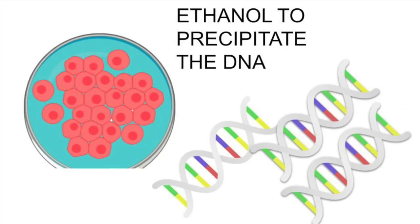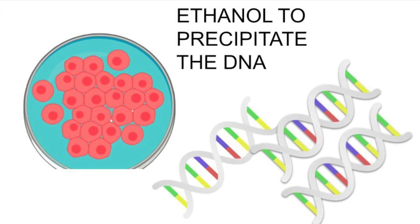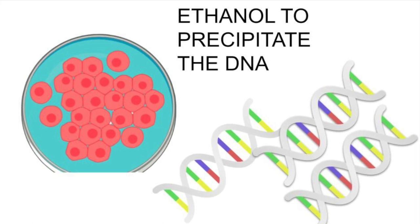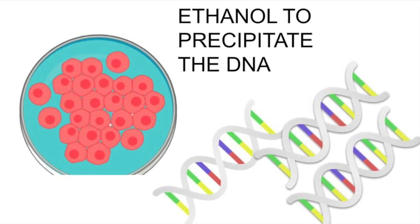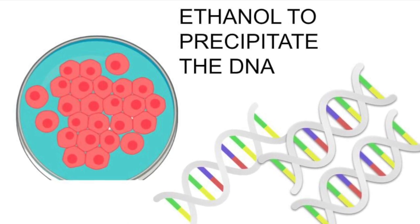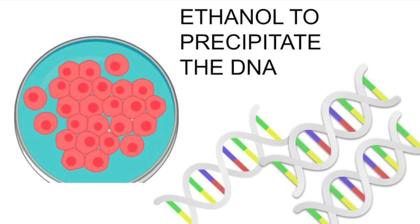The aqueous layer is removed to a separate tube and ethanol is added to precipitate the DNA out of solution and concentrate it. The purpose of the ethanol or isopropanol is to reduce the solubility of the nucleic acid, allowing it to pellet out of solution when we centrifuge it.